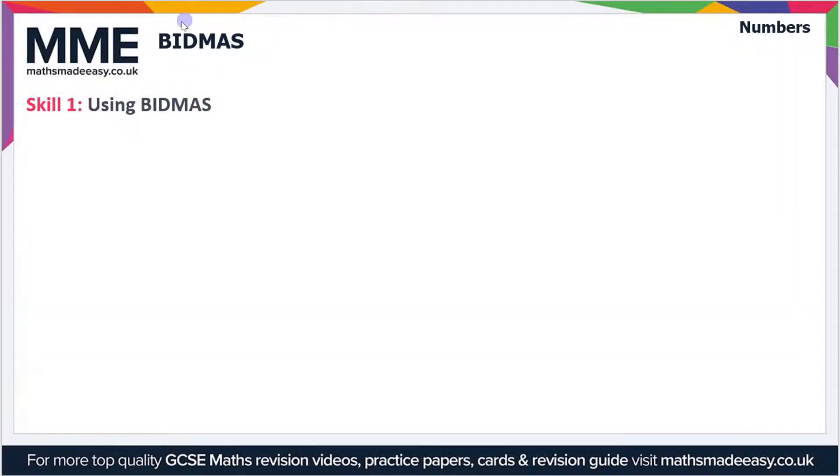Welcome to the Maths Made Easy tutorial on BIDMAS. BIDMAS is the order of operations which we use when performing a calculation. It's an acronym and it stands for B for Brackets, I for Indices, or sometimes O for Order because we can write BIDMAS as BODMAS—it's the same thing. O would stand for Order, but we usually use I for Indices.